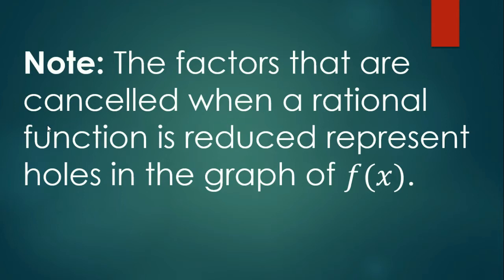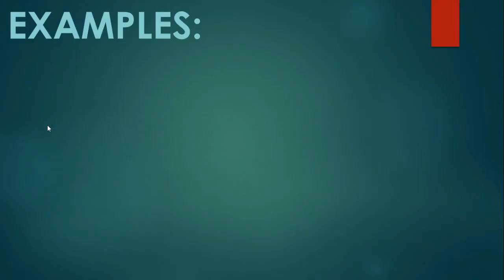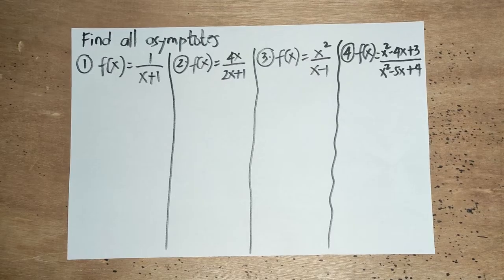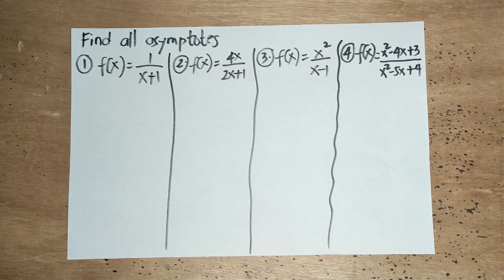We have an important note here: the factors that are cancelled when a rational function is reduced represent holes in the graph of f(x). Bear that in mind. Examples: Find all asymptotes of the graph of each rational function. In this example, we find all the asymptotes available for the following functions.